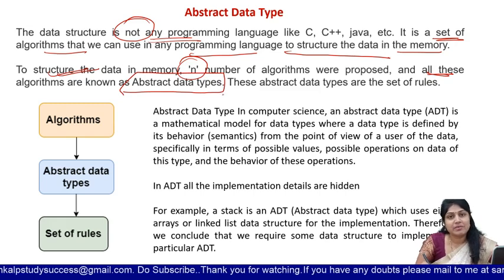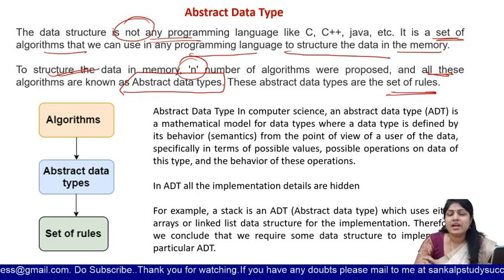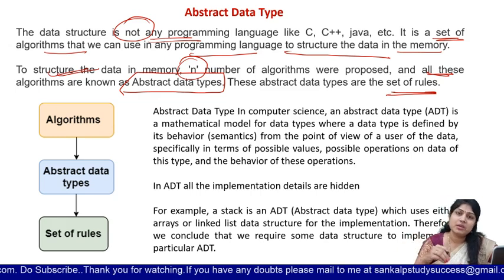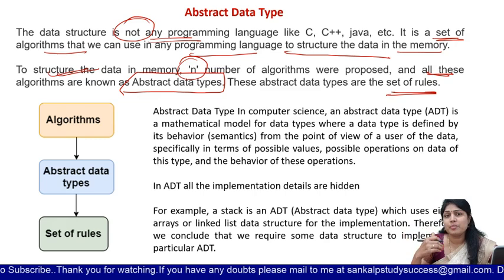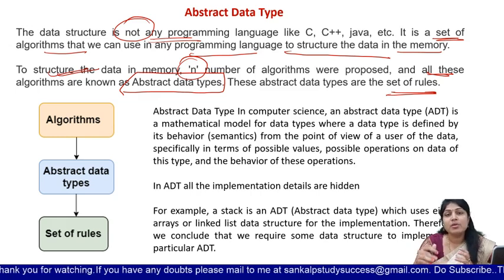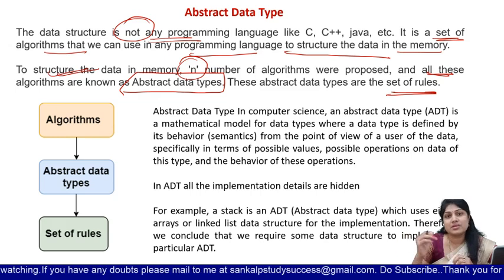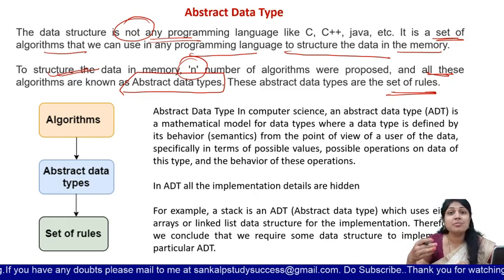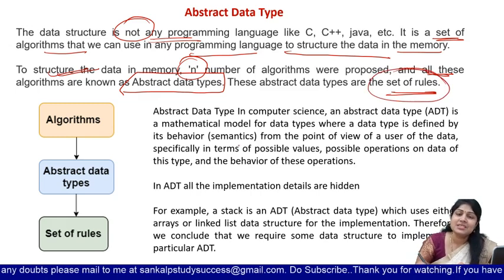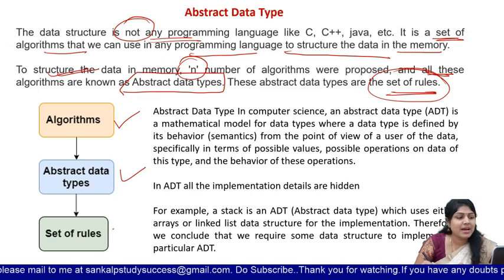All these algorithms are nothing but abstract data types. So these abstract data types are nothing but a set of rules, a set of instructions. For example, we have a stack. In a stack, elements are pushed and popped following certain criteria. Similarly, in a queue, insertion happens in one specific way. In a linked list, insertion and deletion happen in a particular way. There are set of rules for each and every data structure in order to maintain the data. Those rules are nothing but the abstract data type.